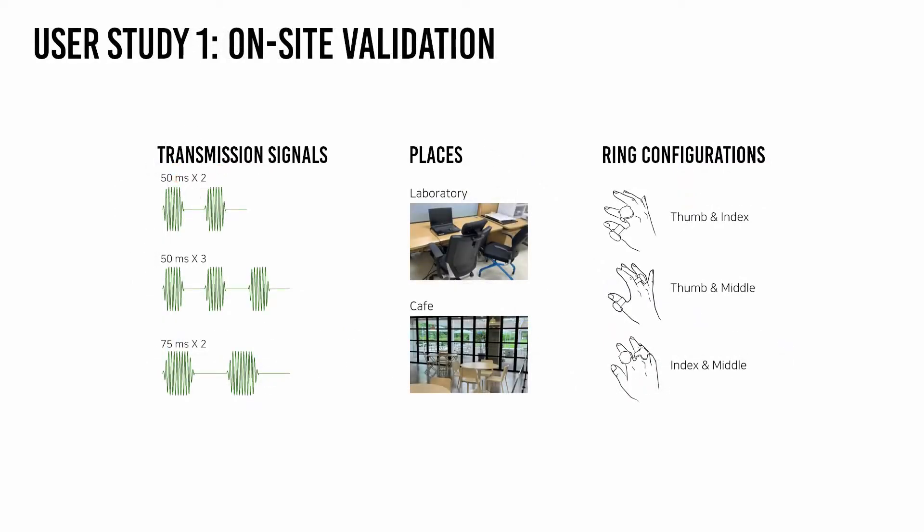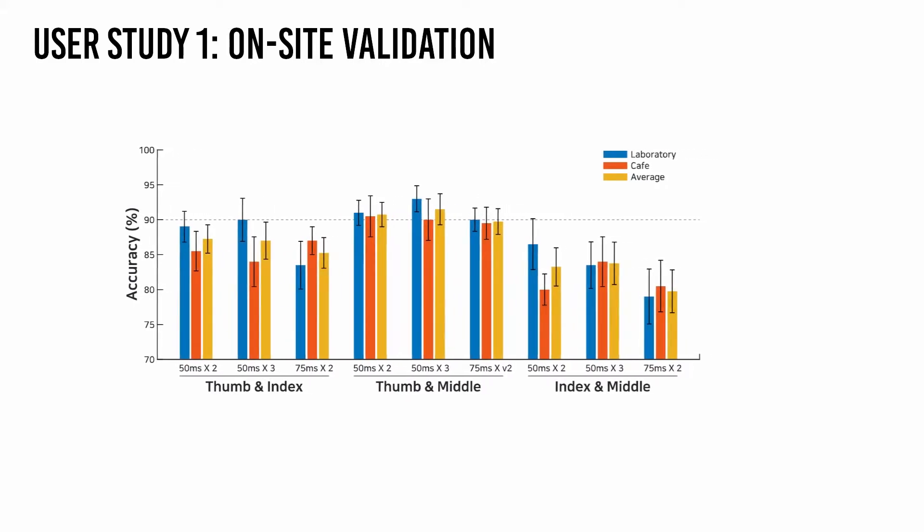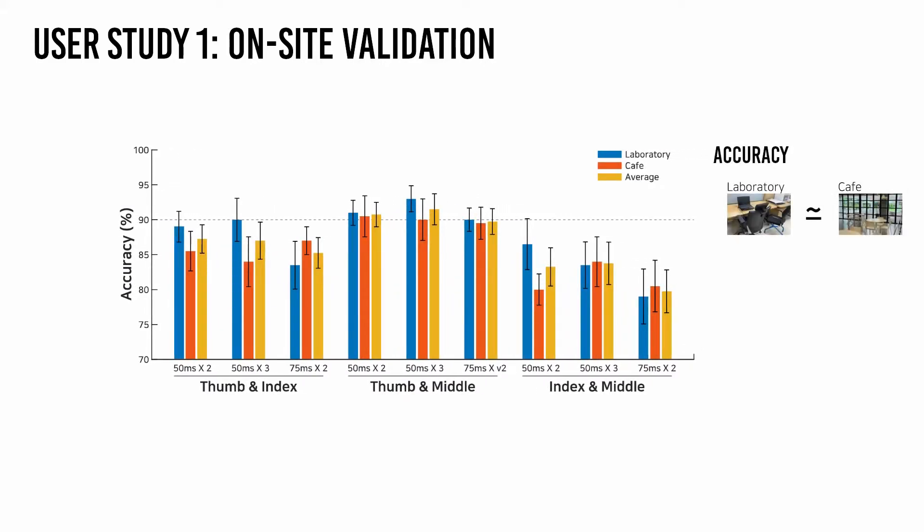To consolidate the simulation results, we verified the selected communication protocols at two places: the laboratory and a cafe. The resulting highest accuracy in each place was 93% and 90.5%, respectively.